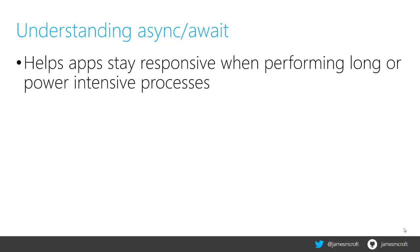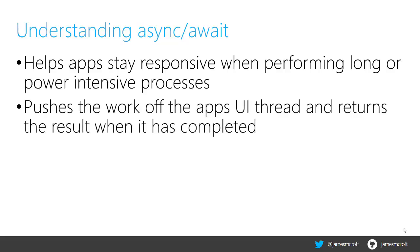Async await helps your application to be responsive and stay alive when the code behind it is performing a long or power-intensive operation — for example, downloading a large amount of data from a web service. What async await is doing here is pushing that work off the UI thread and allowing the application to carry on, and eventually once the operation is completed, it will return the results back onto the same context that the method was executed from — in this scenario, the main UI thread — and that'll allow you to update the UI.